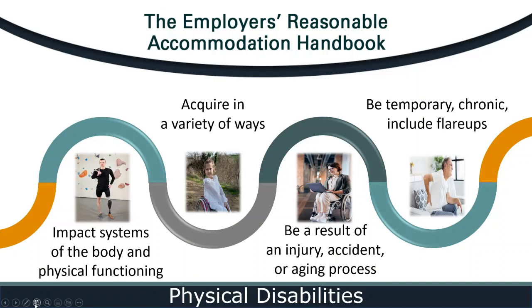Some common examples are conditions like arthritis, cerebral palsy, multiple sclerosis, spinal cord injuries, amputations, and musculoskeletal injuries. Despite the name of the condition or how it was acquired, what's most helpful for employers is to understand how a physical disability impacts an individual relevant to the workplace. Can you explain some of the physical functions and limitations an individual with a physical disability may experience?